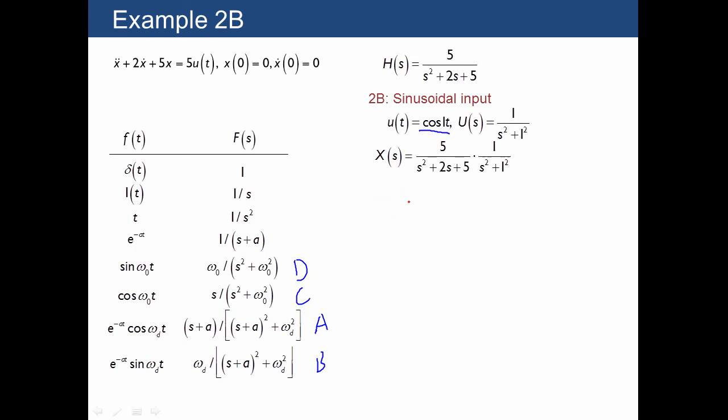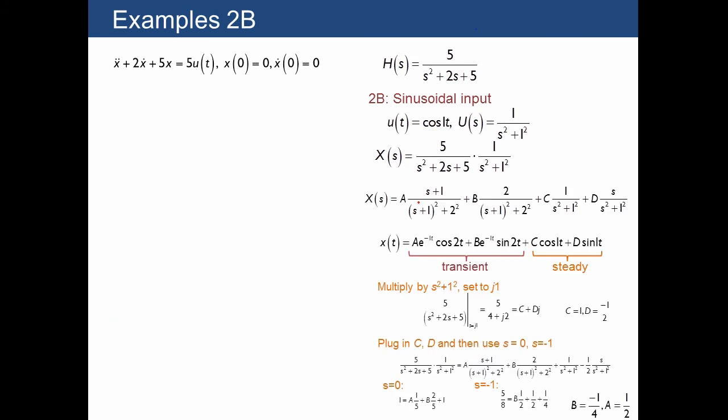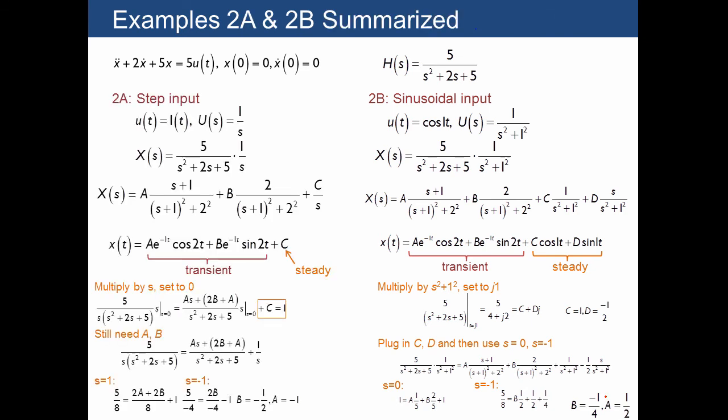I'm not going to go through all the steps except to say that we can do the normal partial fraction expansion and summarize the math like this. We can plug in different values, multiply by different quantities, plug in different values, and this is what we end up with. Just to summarize both of these examples, here are the steps that we did and also how we actually solved for A and B.